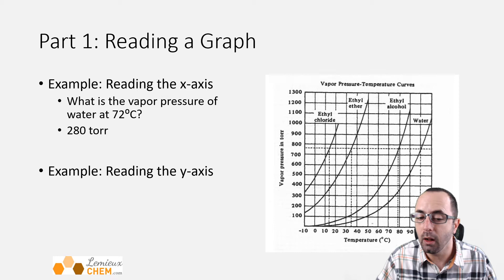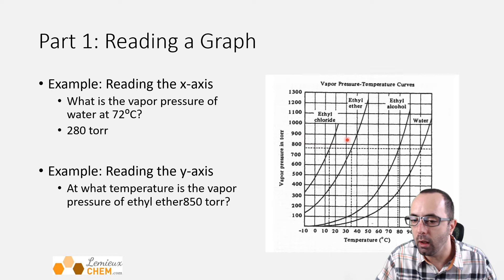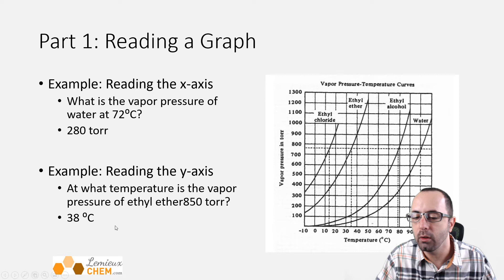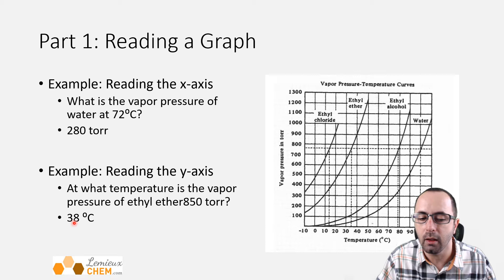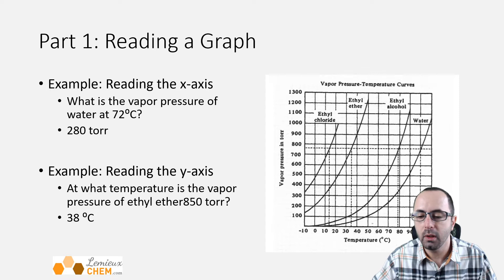We can also read off the y-axis. At what temperature is the vapor pressure of ethyl ether 850 Torr? We'd read the vertical axis above 800, between 800 and 900 — right between those two would be 850. Then we read across to the ethyl ether line and read straight down. Our temperature will be between 30 and 40, a little closer to 40, so about 38 degrees Celsius. If you said 37 or 39, that's okay too — we're guesstimating on this last digit. We'll end up calling that last digit the last significant figure when we start on measurements next week.